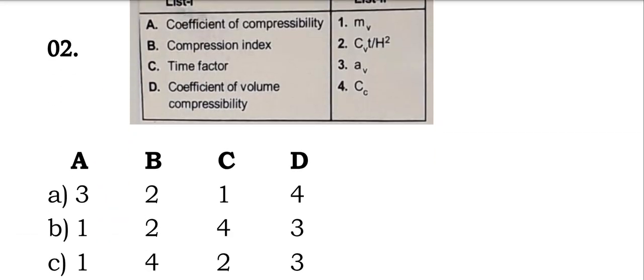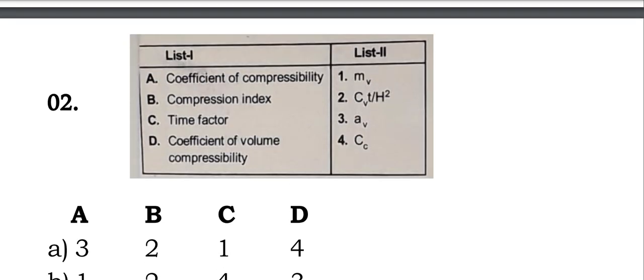Next question. This is a list 1 to list 2 matching. Coefficient of compressibility is denoted as Av. So A is correct. Option 3 is correct.